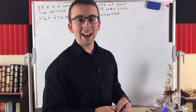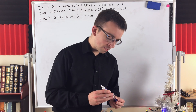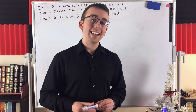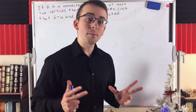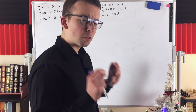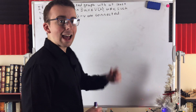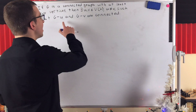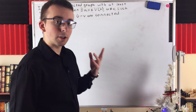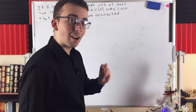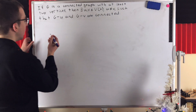This is going to be a proof by contradiction. We'll begin the proof by taking two special vertices that have the characteristic we want: that subtracting either of them from the graph does not disconnect the graph.